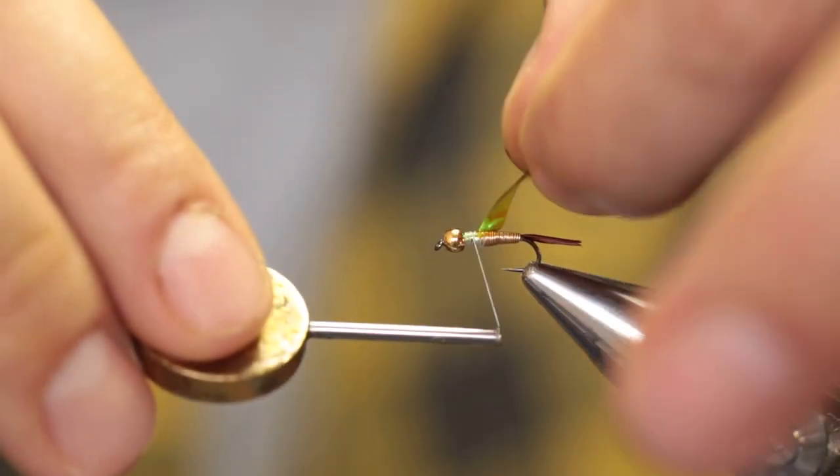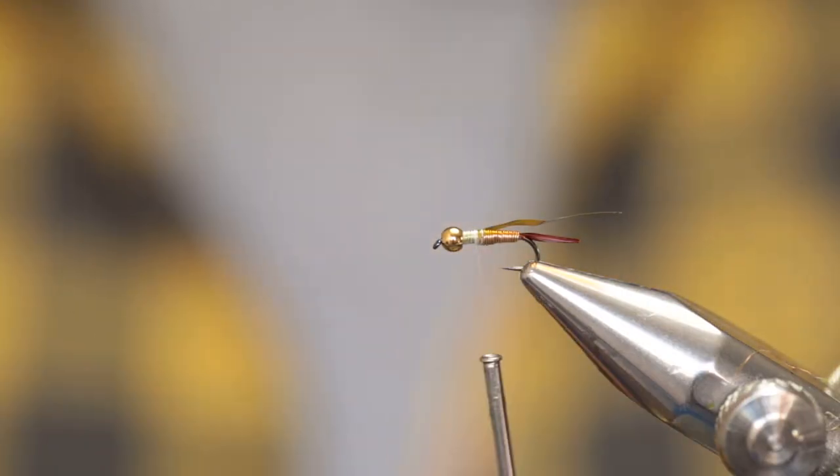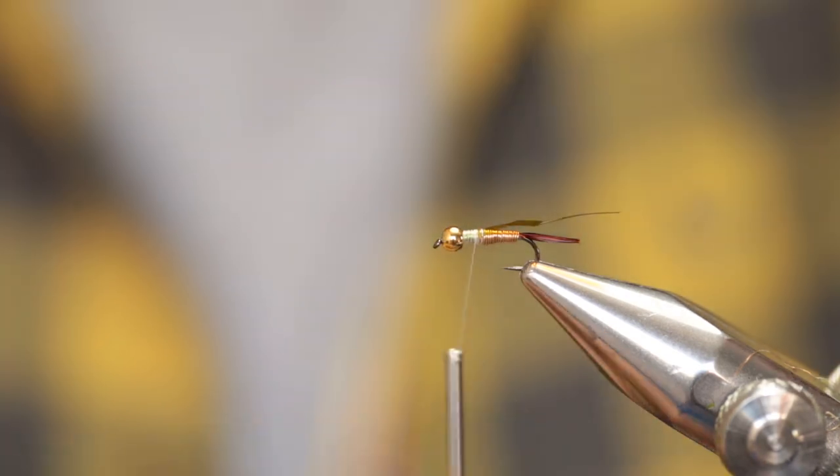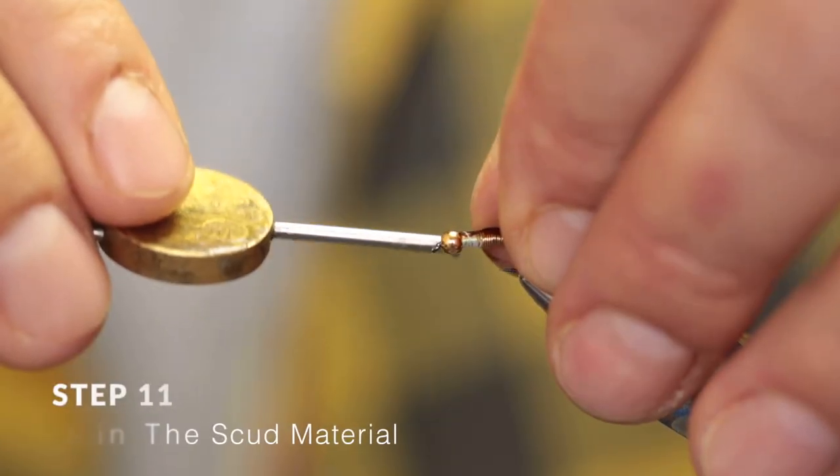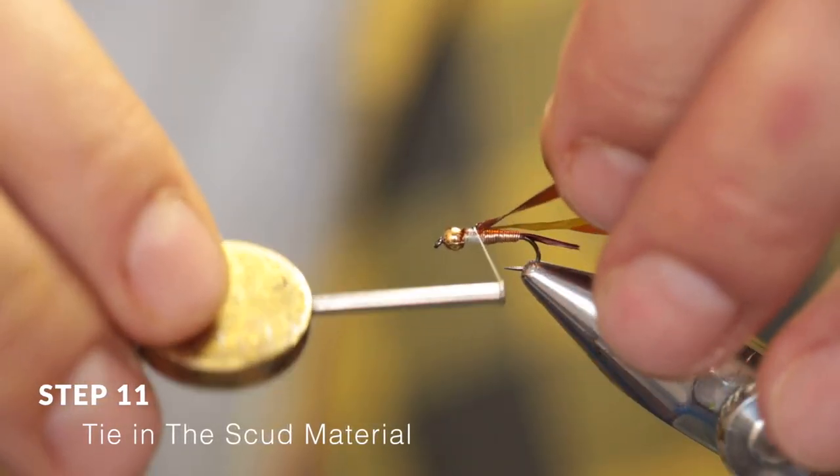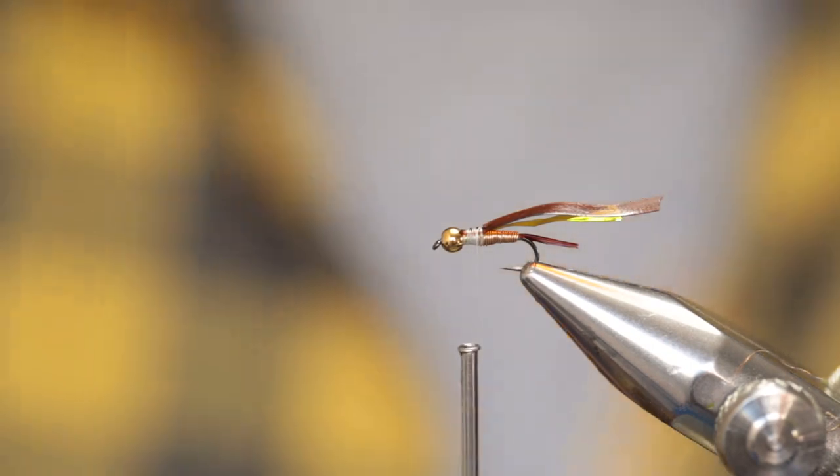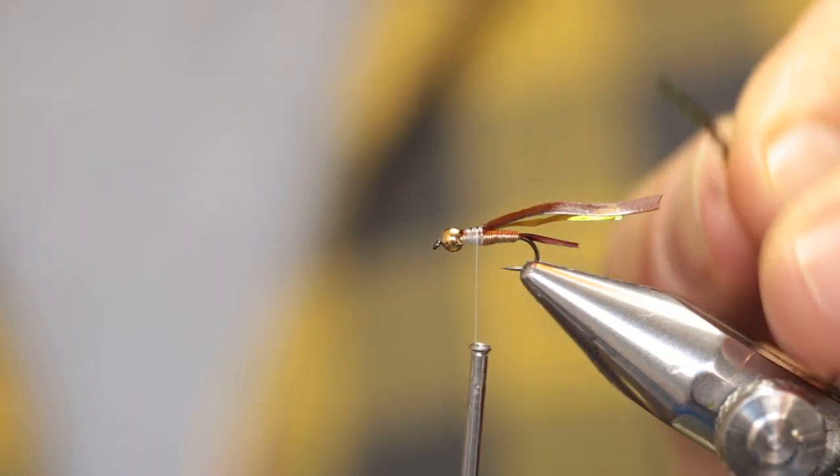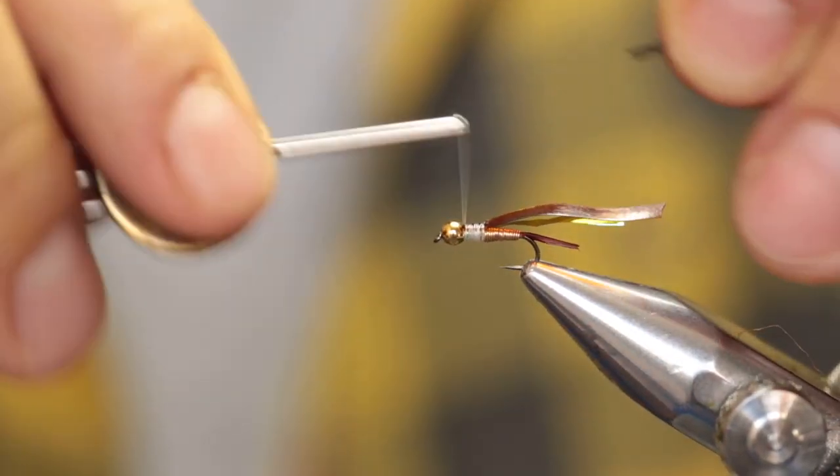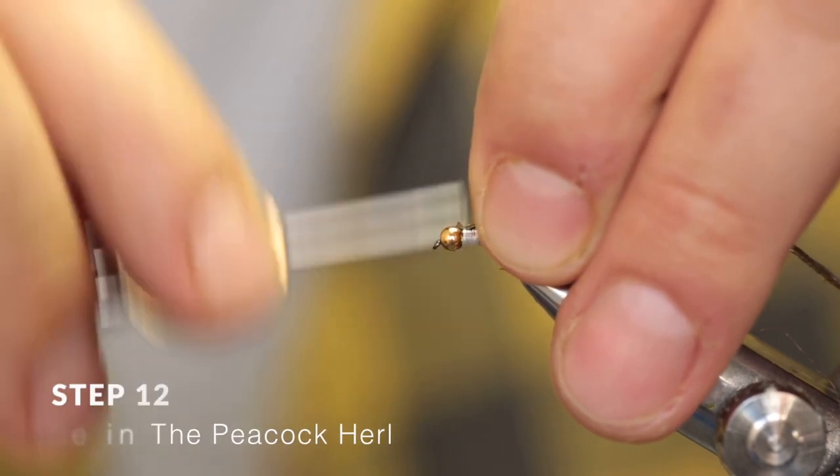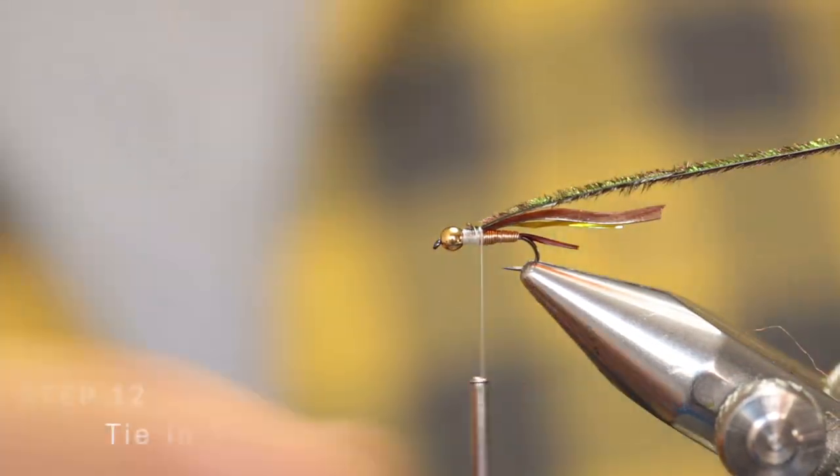Move your thread all the way back to where you ended your abdomen. Now do the same with the scud back material—about the same width and thickness. Move the thread forward again and tie that on top of the hook shank. Now take two peacock herl fibers and align their tips. Cut them, move your thread forward again, and lock them in place. Wrap your thread back to the base of the abdomen where you're going to start your thorax and wing case.